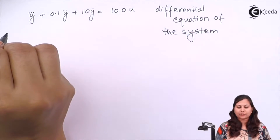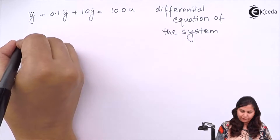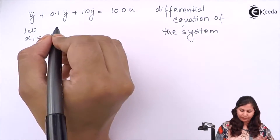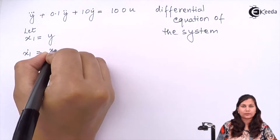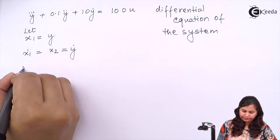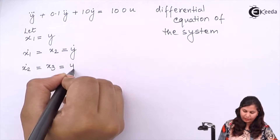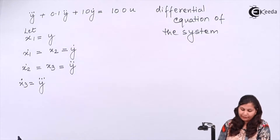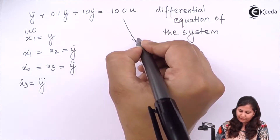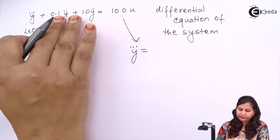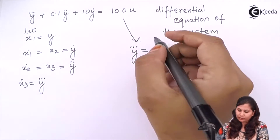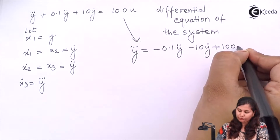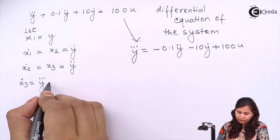To obtain the state space representation we have to choose the state variables. Let x1 = y, so ẋ1 = ẏ = x2. Then ẋ2 = ÿ = x3. And ẋ3 = ÿ̇, which from our equation equals −0.1ÿ − 10ẏ + 100u, i.e., ẋ3 = −0.1x3 − 10x2 + 100u.